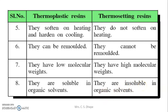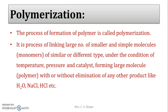This is about the third type of classification depending on thermal behavior — thermosetting and thermosoftening — which we have covered here. The next part we are going to start is polymerization. Polymerization is the process of formation of a polymer. We are going to cover this part in the next video. Till then, thank you.